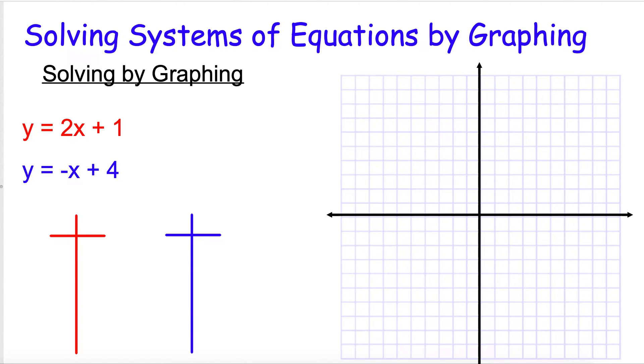All right, so in this video we're going to look at solving systems of equations by graphing. What we're going to do here is take two equations listed right here: y equals 2x plus 1 and y equals negative x plus 4, and figure out where these two lines cross. When we say solving systems of equations, we mean we have multiple equations and we're going to figure out where they intersect.